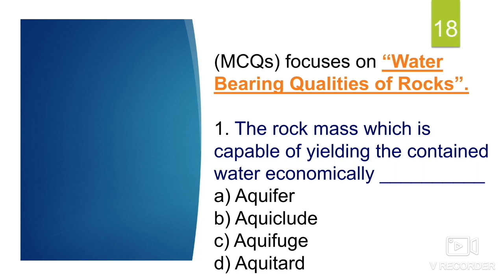The first question deals with the rock mass which is capable of yielding the contained water economically. It is known as an aquifer. It's quite important to understand the basic water-bearing qualities of rocks, because there are basic differences and properties that distinguish them from one another.